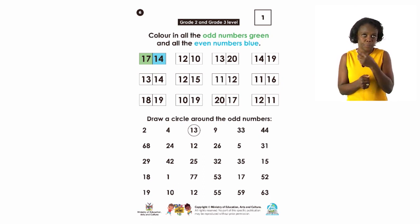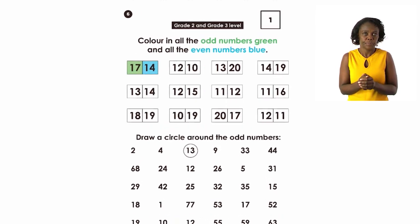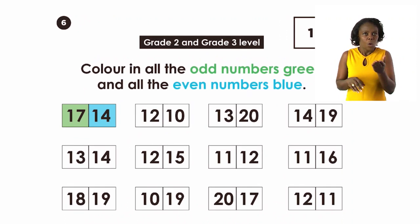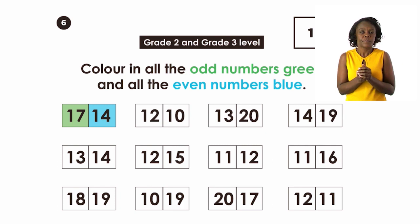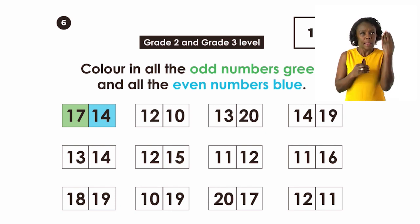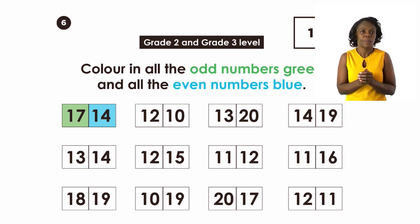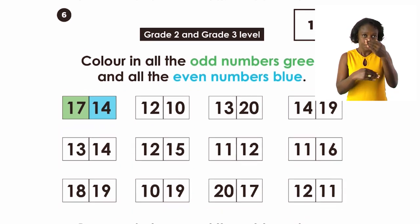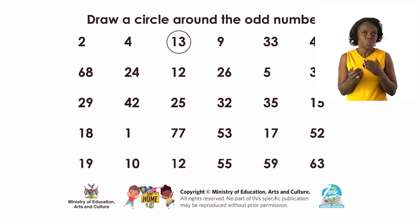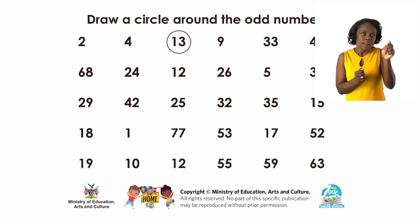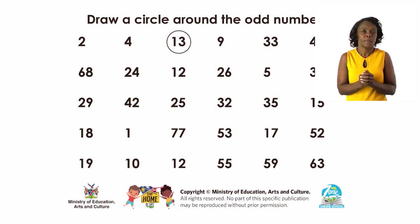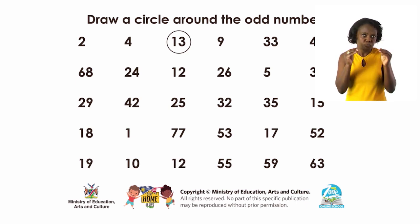For the grade 2s, I have an exercise for you — it's a very simple one. I would like you to color in all the odd numbers in green and color all the even numbers in blue. Use blue for the even numbers and green for the odd numbers. The next exercise is very simple — I would like you to circle, put a round circle around all the numbers which are odd. Remember what are odd numbers — you skip them when you are counting in 2.